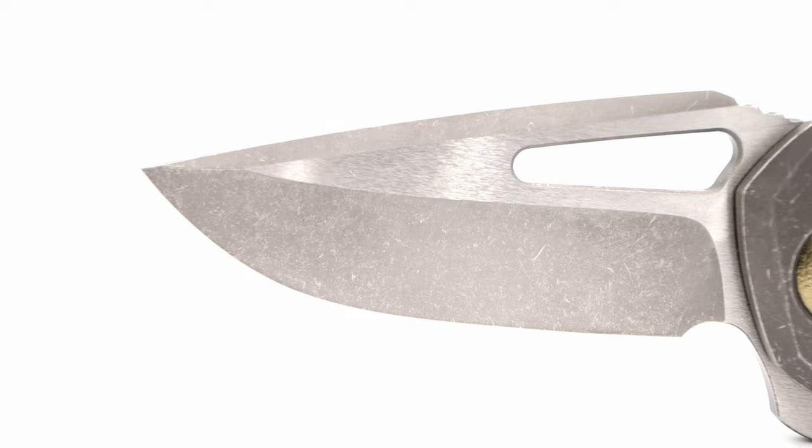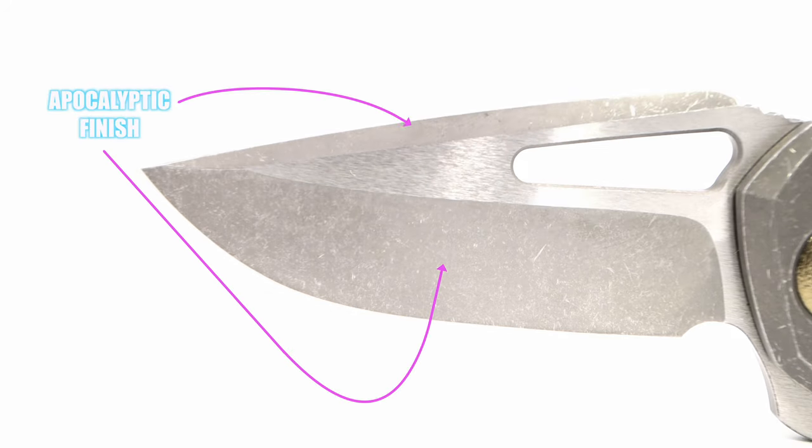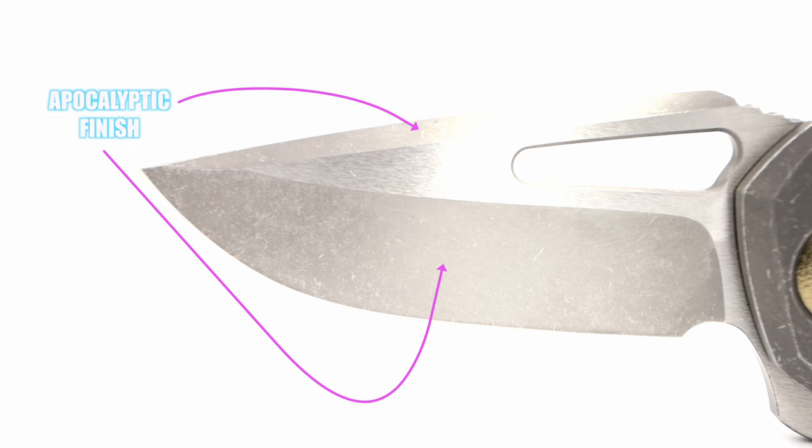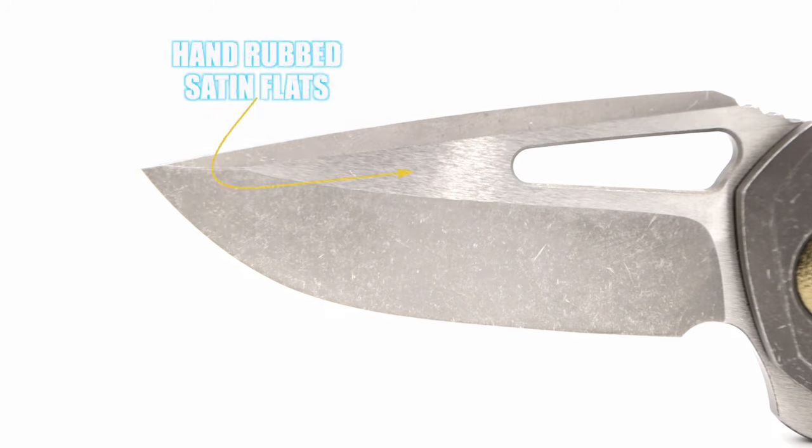The finish is Marfion's two-tone apocalyptic style, which is bead blasted and stone washed on the bevel of the grind and swedge areas, while the flats are a hand rubbed satin.